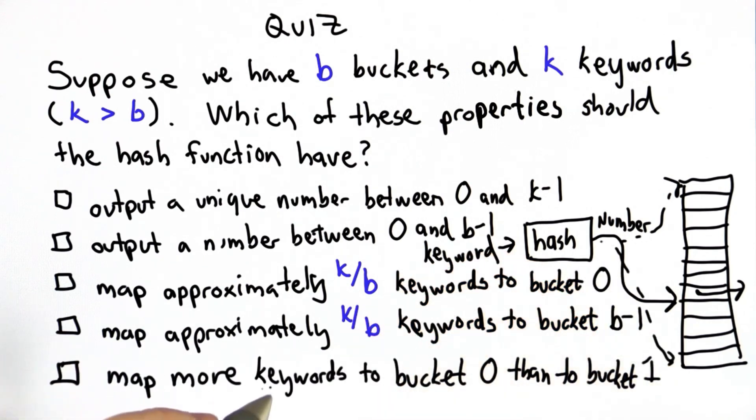And the final choice is it should map more of the keywords to bucket 0 than it maps to bucket 1. So check all of the properties that we would like the hash function to have.